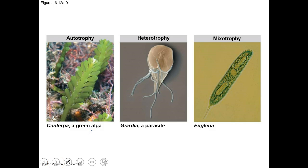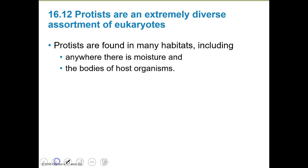For example, an alga does photosynthesis, Giardia is a parasite, and euglena is a mixotroph that can do both. Protists are found in lots of habitats, really anywhere there's moisture — ponds, lakes, even our sink — and also in the bodies of host organisms.